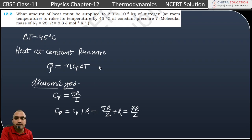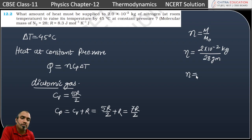If we talk about n value, the number of moles, then it will be given mass divided by molecular mass. Here the given mass is 2 × 10⁻² kg, and the molecular mass is 28 grams. We need to convert to grams.